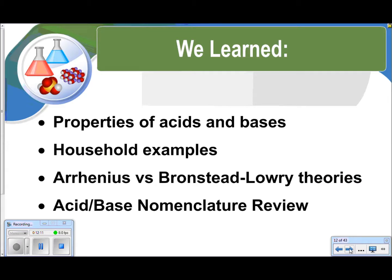So what we learned in this video. First, we talked about the properties of acids and bases. We went through some household examples. We learned about the Arrhenius and Bronsted-Lowry theory, which includes conjugate acid and conjugate base. And then we did some acid-base nomenclature review. Those are the things that you should have learned from this video. I hope you enjoyed it. I hope you understood everything. Please write down your questions so that we can answer them in class. Have a wonderful evening.